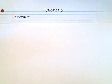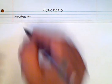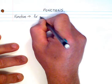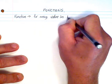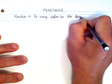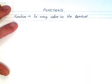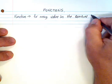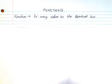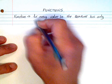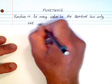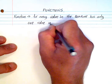And I like to call it a well-behaved relation, but the actual definition would be that for every value in the domain, every value in the domain has only one value in the range.